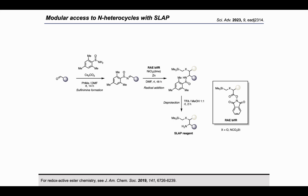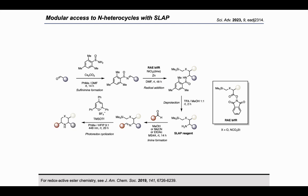The sulfenamide is then cleaved using TFA — very simple. This also works on SCX-2, which is a cation exchange sorbent, but for more reliability in parallel synthesis we use TFA. This reveals the SLAB reagent, which can then be reacted with another aldehyde to first form the imine, using molecular sieves to remove water. This imine can then in the key step undergo a photoredox cyclization with the radical revealed by the TMS group to form the final saturated N-heterocycle.